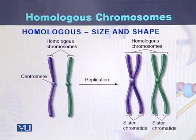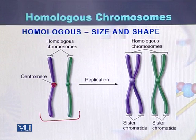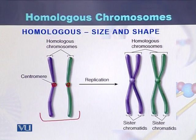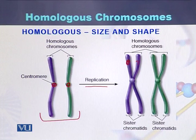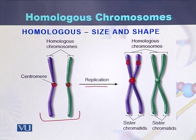Here is another example showing homologous chromosomes which are not replicated. In the middle there is a centromere, and their shape and size are similar to each other, so they are called homologous chromosomes. Once homologous chromosomes replicate, the copies are called sister chromatids — chromatid one and chromatid two. Both sister chromatids are joined at a position called the centromere.